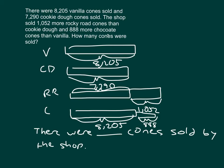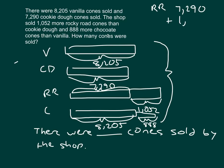We're trying to figure out all the cones together: vanilla, cookie dough, Rocky Road, and chocolate. Vanilla and cookie dough are already given. We figure out Rocky Road by adding 7,290 and 1,052. Carefully adding those gives 8,342, which is the amount for Rocky Road.